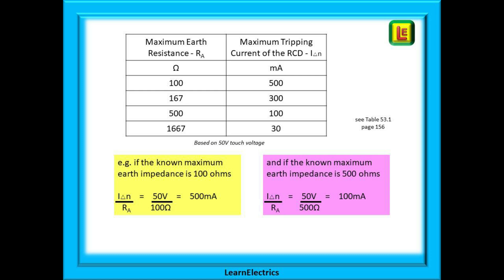If we know the earth fault impedance in ohms we can quickly determine the tripping current required. We use a touch voltage of 50 volts, since below 50 volts a normal healthy adult is unlikely to receive a fatal electric shock. A properly selected RCD should trip before the voltage on exposed metalwork rises above 50 volts during a fault. 50 volts divided by 100 ohms will give a tripping value of 500 milliamps, and 50 volts divided by a soil impedance of 500 ohms will give a tripping value of 100 milliamps. That makes selection easy.